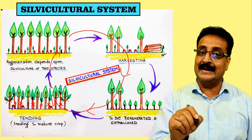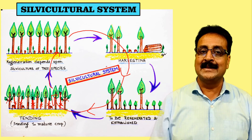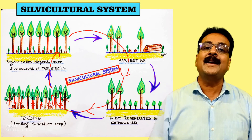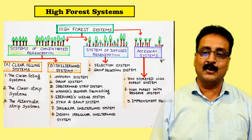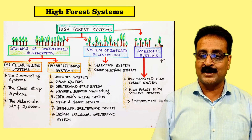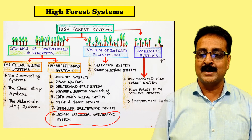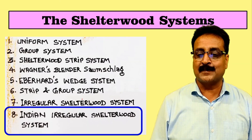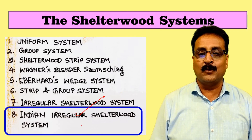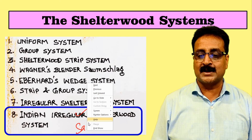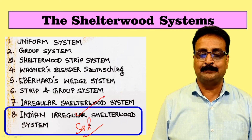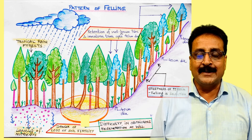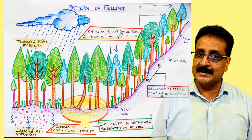The silviculture system helps us mimic the natural conditions and let Shorea robusta grow nicely. That is why it could not come under the uniform shelterwood system and fits very well into the Indian irregular shelterwood system. In this system we will use Shorea robusta, commonly called sal, as our example. The pattern of felling has already been explained - there are two patterns.